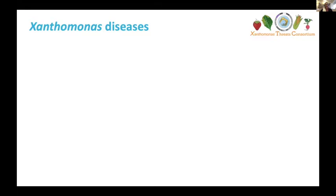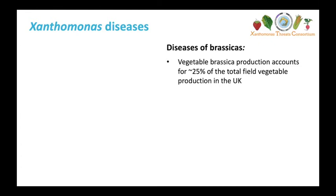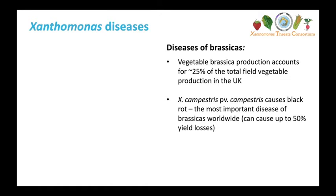I thought I'd kick off by going through some diseases caused by Xanthomonas species that will be addressed in our project, starting with our model hosts, which are brassicas. Brassicas are a diverse genus — many species are cultivated, including oilseed brassicas like oilseed rape, and vegetable brassicas like cabbage, broccoli, cauliflower, and kale. In the UK, vegetable brassica production is a big one — it accounts for a quarter of the total field vegetable production. As Jamie mentioned, Xanthomonas campestris campestris causes black rot in brassicas, and it's the most important disease of brassicas worldwide, causing losses of up to 50%.